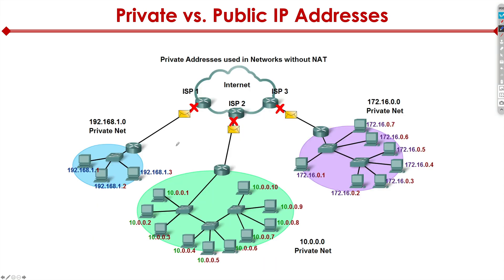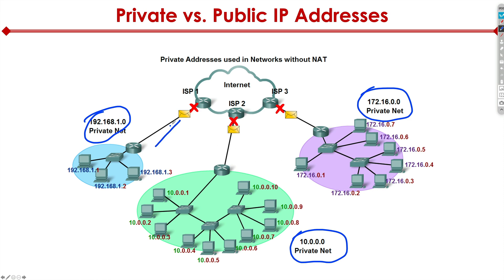What ends up happening is if you're using these private networks in any of these ranges — 192.168, 10.0, or the 172.16 range — as those packets go out and hit your ISP router, for example your Comcast device or cable modem at home, if that router sends a source IP of 192.168.1.0 out to the ISP router, the ISP router will actually discard that packet. It's not going to forward it, because these are private IP address ranges. The RFC standard specifically states these IPs are not allowed to be routed on the internet — they cannot become part of the internet routing table.